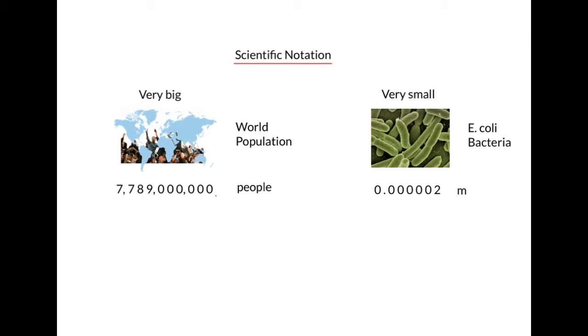So let's simplify these numbers. For the world population, we locate the decimal and we move it over until it appears between the first two significant digits. In this case, between the two sevens. These are the two most significant digits because they have the highest place value.